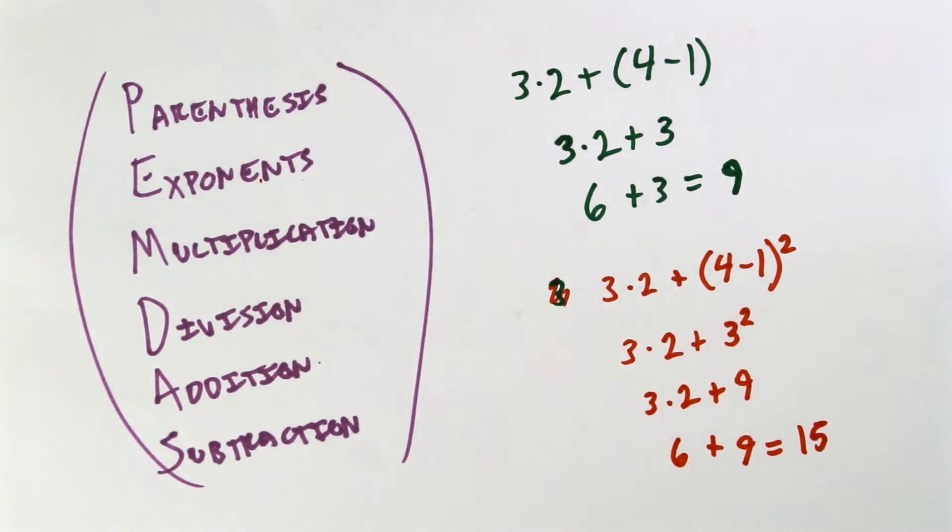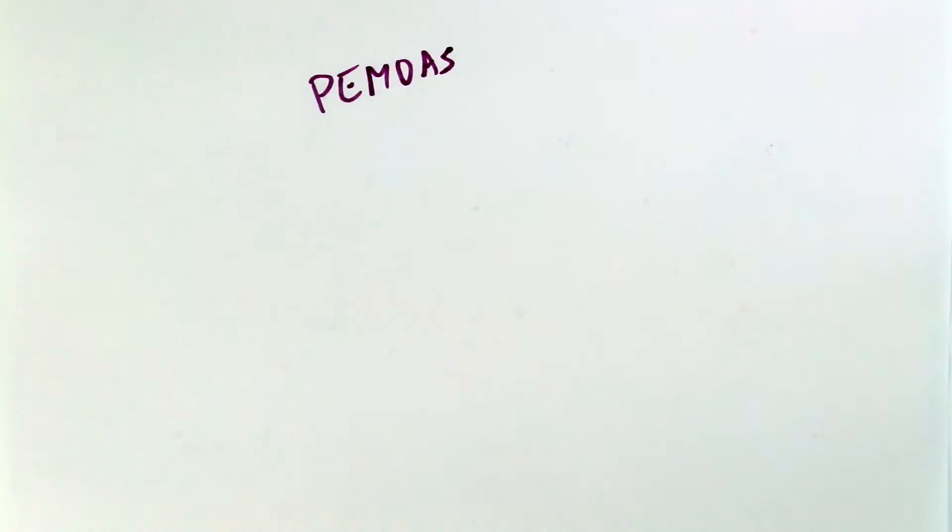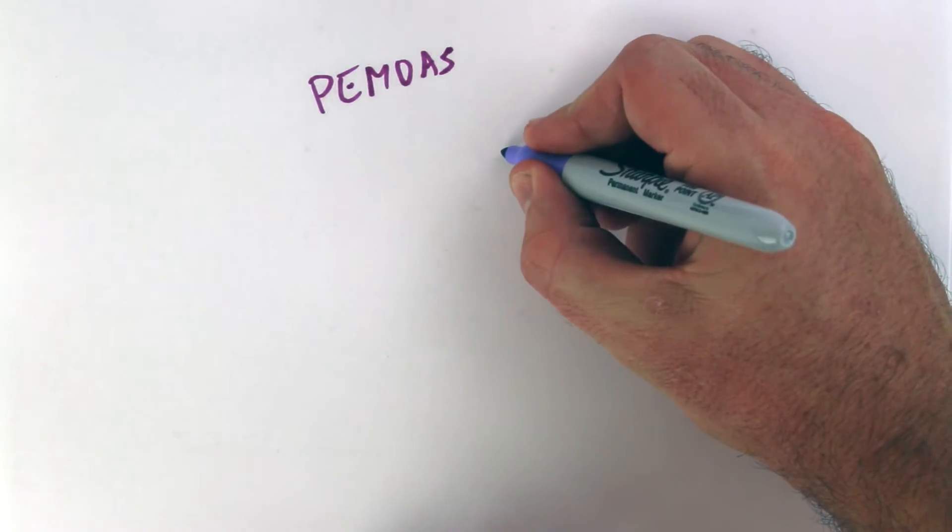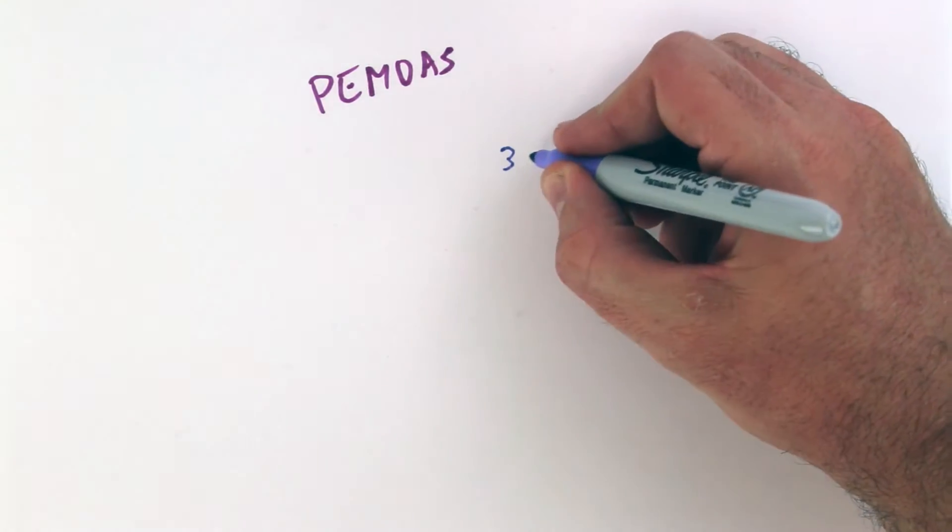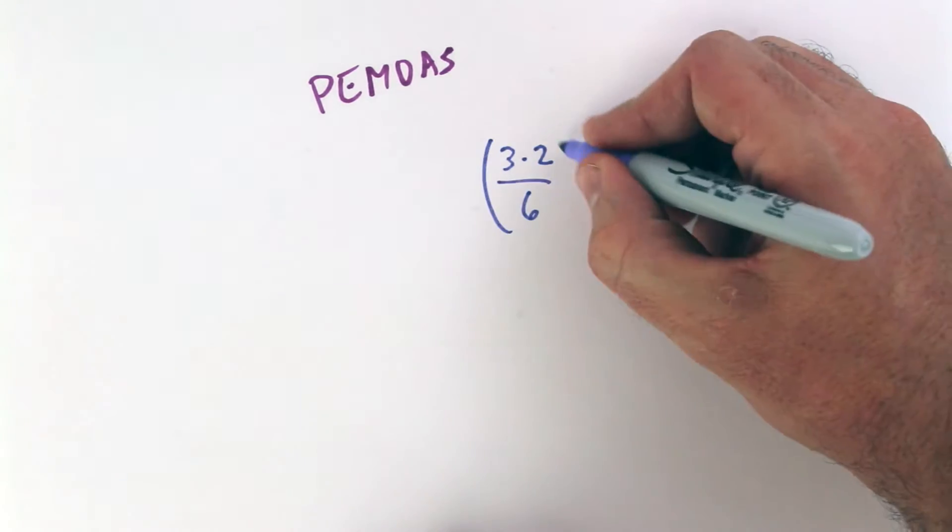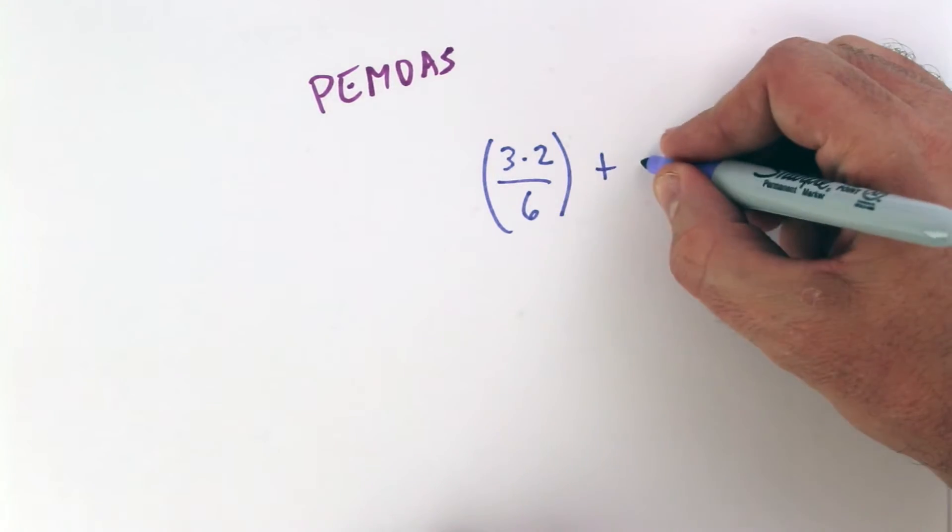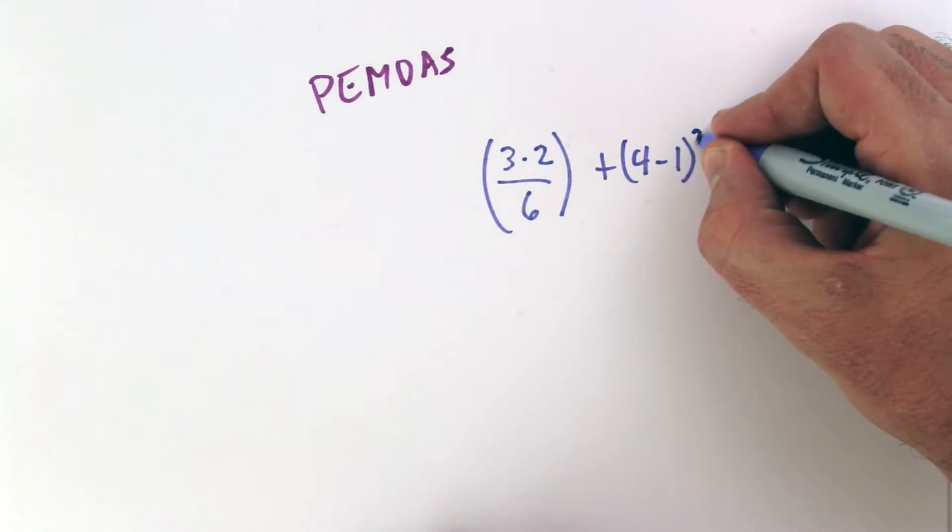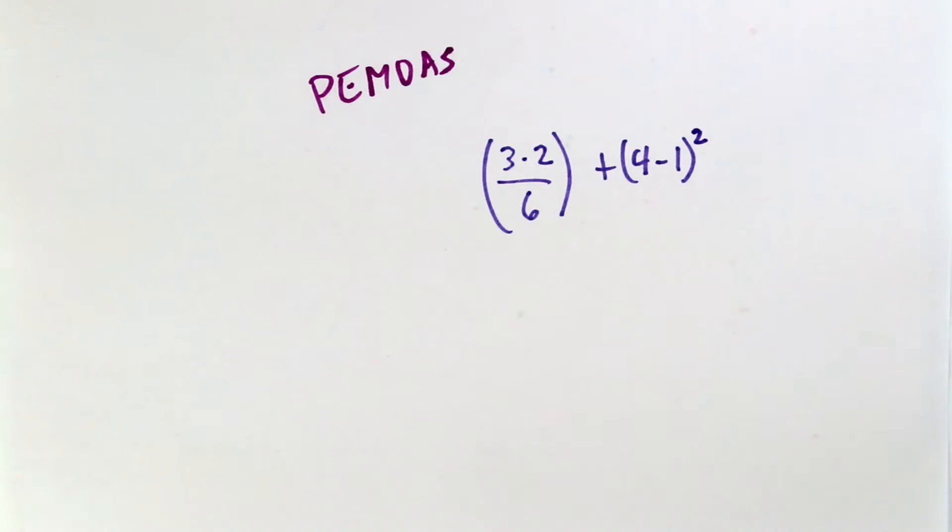Let's look at one more example just to drive the point home. Remember PEMDAS? Write this on all your tests. Remember it every time you do math. And this time we're going to say 3 times 2 over 6 in parentheses plus 4 minus 1 in parentheses squared. So now we have two items in parentheses. What do we do first?